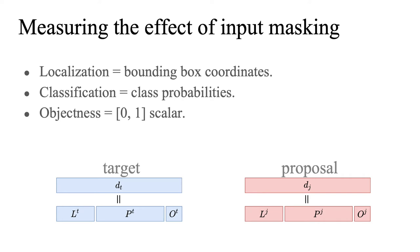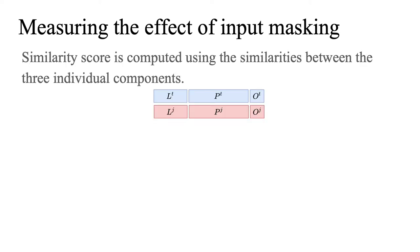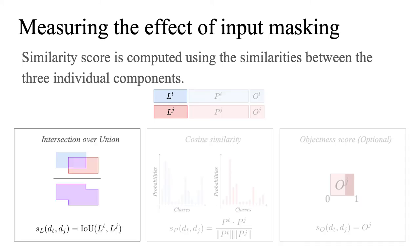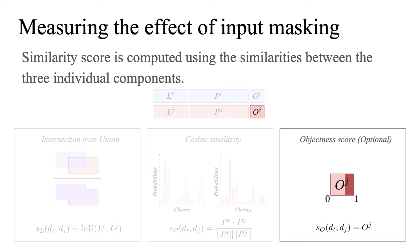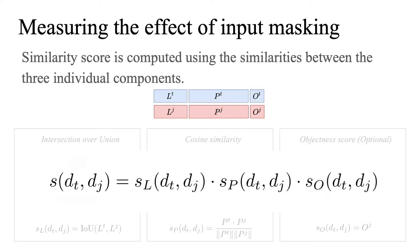Both detection vectors — target and proposal — consist of three parts: localization, classification, and objectness score. The similarity score is computed using the similarities between these three individual components. For the localization parts, we compute intersection over union of the bounding boxes. For the classification parts, we compute cosine similarity of two class distributions. For the objectness, we simply use the objectness value of the proposal. We multiply these three values to compute the similarity score between any two vectors. Multiplication models the logical AND operation — if any of the factors is close to zero, we would like the similarity value to be close to zero as well.